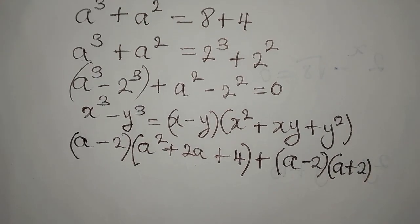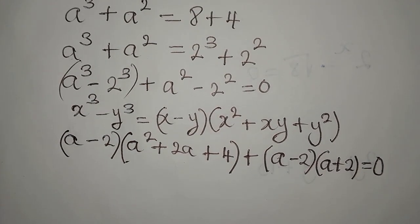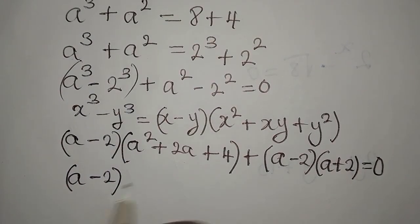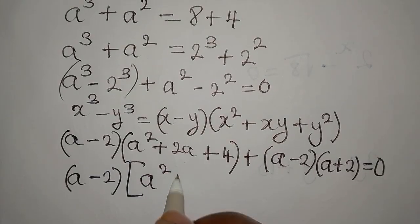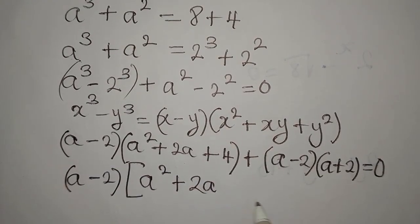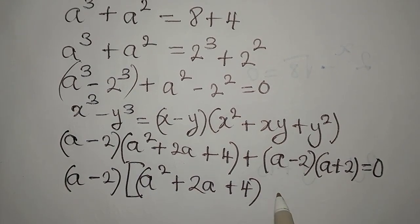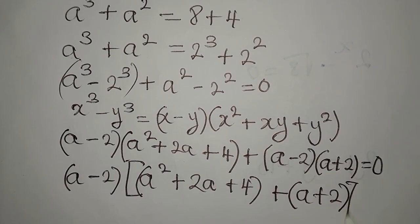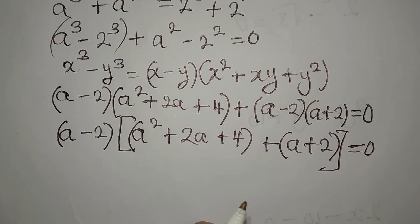We equate everything to 0. Now (a - 2) is a common factor. What's left over is (a² + 2a + 4) from the difference of cubes part, plus (a + 2) from the difference of squares part, all equated to 0.